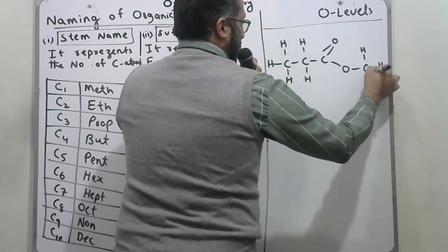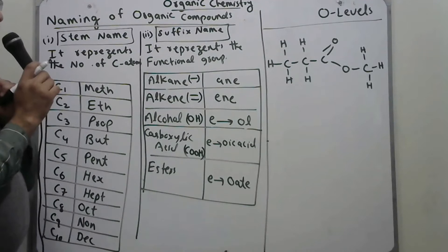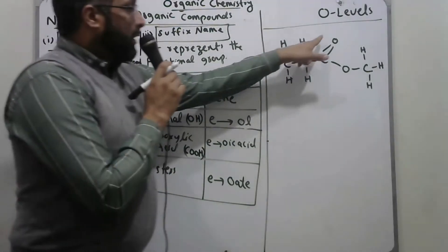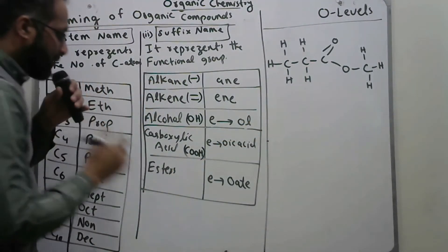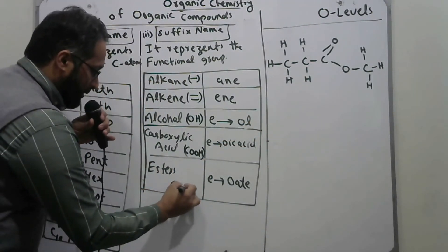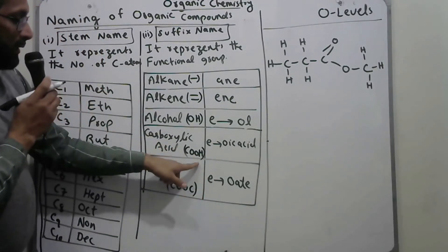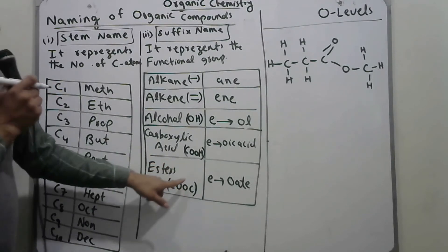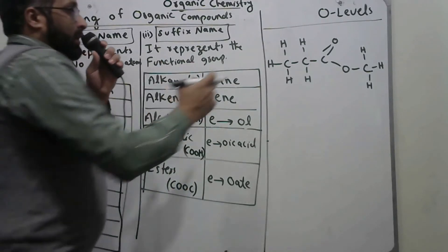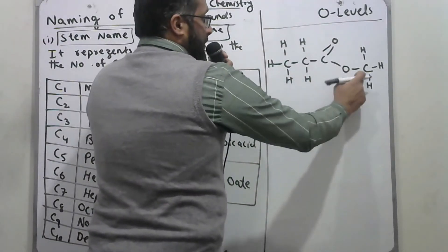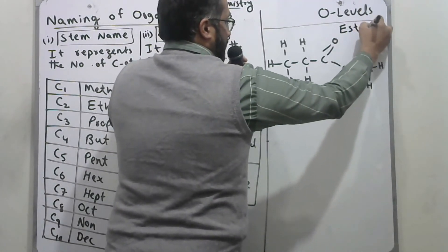For the next example involving esters: first, identify the functional group. There are two oxygens, which means it could be carboxylic acid or ester. In carboxylic acid there is hydrogen with oxygen, while in esters the H is replaced by carbon. Looking at C-O-O-C, it is an ester.